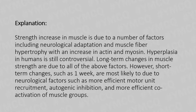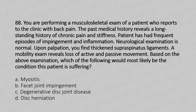Moving to our 88th question. You are performing a musculoskeletal exam of a patient who reports to clinic with back pain. The past medical history reveals a long-standing history of chronic pain and stiffness. The patient had frequent episodes of impingement and inflammation. Neurological examination is normal. Upon palpation, you find a thickened supraspinous ligament. A mobility exam reveals loss of active and passive movement. Based on the above examination, which of the following would most likely be the condition this patient is suffering from?